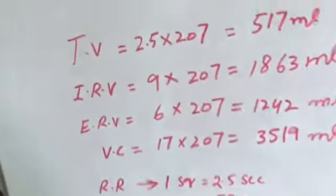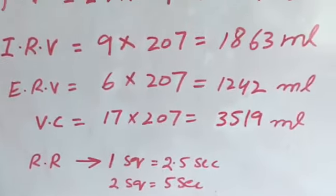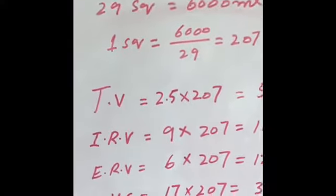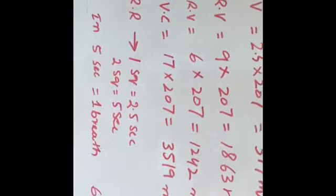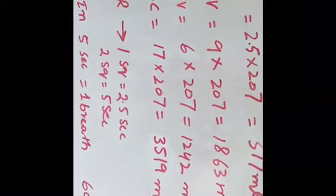Finally, vital capacity includes inspiratory reserve volume, tidal volume, and expiratory reserve volume. The total number of squares in the vital capacity is 17. Multiplying 17 by 207, our vital capacity is 3519 ml. We can also calculate respiratory rate by using this spirogram.